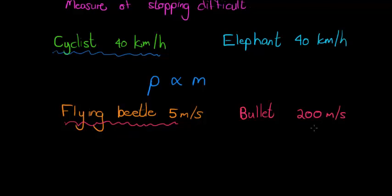And again, this time the reason is a little bit different. They might have more or less the same mass. A flying beetle and a bullet might weigh about 100 grams or whatever, but their velocity is this time the difference. If the flying beetle was traveling at 200 meters per second, you would also not want to stop it. So this time we see the velocity is another thing that we have to consider, and again, the greater the velocity, the greater the momentum. Momentum is directly proportional to velocity as well.